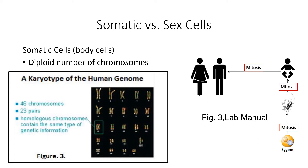Mitosis and cell division allows for the growth and maturation of that child to become an adult. By the time that child is an adult, it's estimated that there are about a quadrillion cells in the human body. All of those cells have 46 chromosomes, 23 pairs, and are diploid. All of those cells were formed through mitosis and cytokinesis, and all those cells are somatic cells.